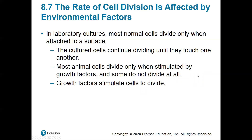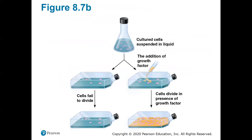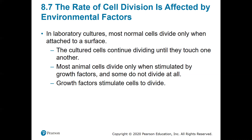The rate of cellular division is affected by environmental factors. When scientists were first studying cell division, they noticed that in laboratory cultures, if you took some samples of cells and put them in a culture plate, they couldn't get them to divide — they would just sit there and eventually die. Most cells will divide only when attached to a surface and will divide until they touch another cell. Most animal cells divide only when stimulated by growth factors, and some do not divide at all.